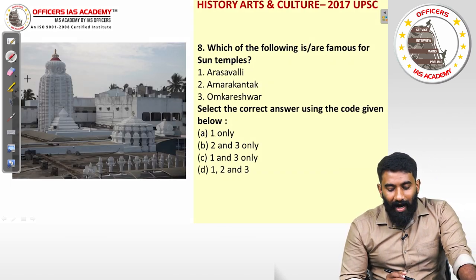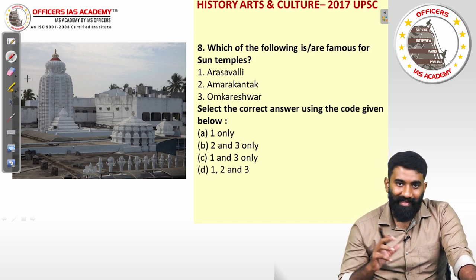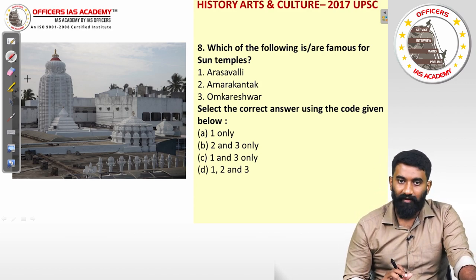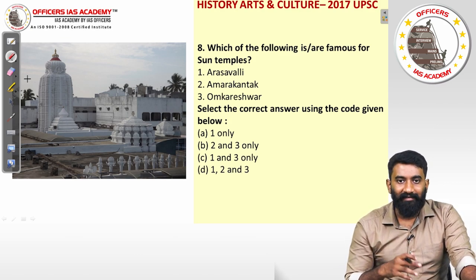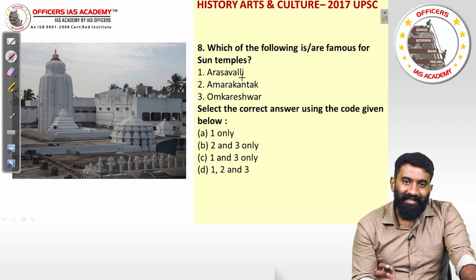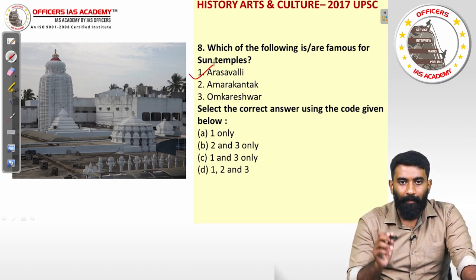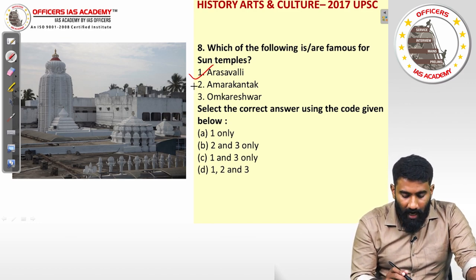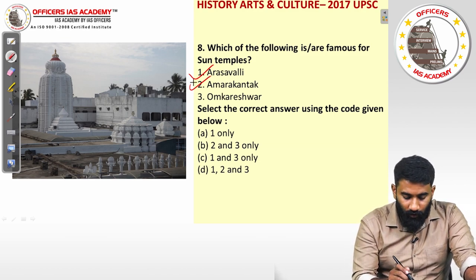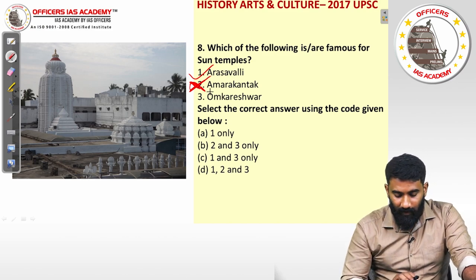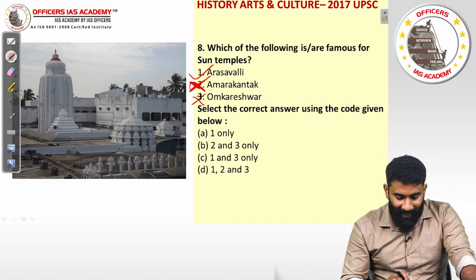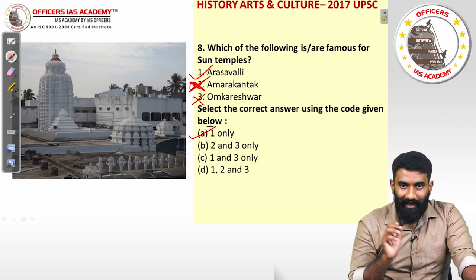Question eight: which of the following sites are famous for sun temples? We know of the sun temple at Konark and at Modhera in Gujarat. The options here are: Arasavalli — yes, there is a sun temple at Arasavalli in Andhra Pradesh. Amarkantak — no, it is a pilgrimage site but has no sun temple. Omkareshwara — no, it has a Shiva temple, not a sun temple. So the answer is option A — one only.